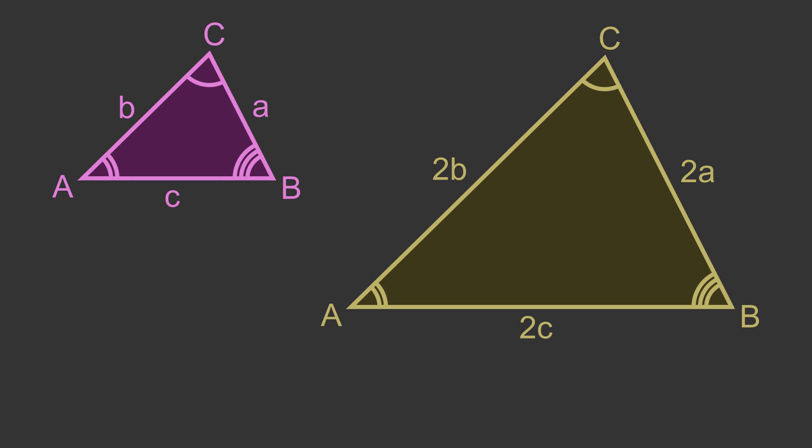Here are two similar triangles. Similar triangles have two properties. All three corresponding angles are the same. In this case each triangle has the same three angles A, B and C.